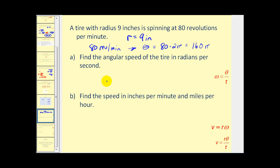So our angular speed or angular velocity will equal our angle theta which is 160π divided by our time. And it says 80 revolutions per minute. So our time is one minute. Let's go ahead and get a decimal approximation here. 160π divided by one would be 502.655 radians per minute as a decimal approximation.